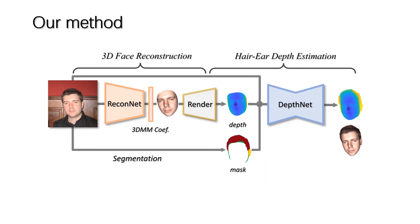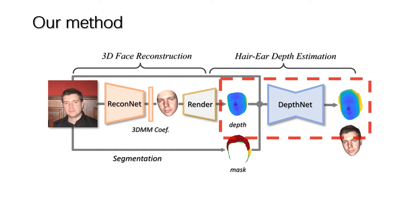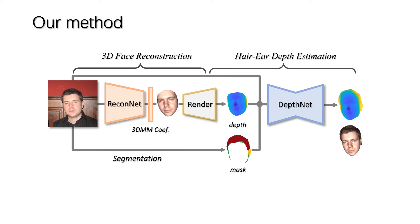We propose a two-step height geometry learning scheme which first learns 3D face reconstruction from single images, then learns to estimate hair and ear depth in a stereo setup. Our loss is specially designed to ensure consistent full height geometry.